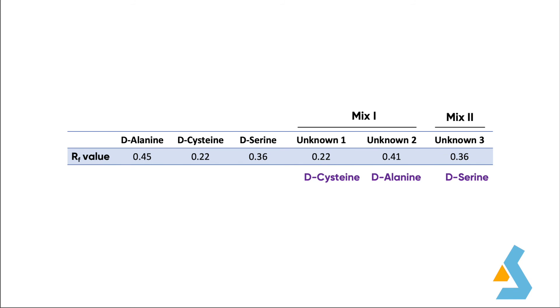So, we can conclude that the content of mixture 1 were consisting of both D-cysteine and D-alanine. As the retention factor of unknown compound 3 was identical with the RF value of D-serine, we identified this compound as D-serine. So, our final sample mixed 2 had only D-serine in it.